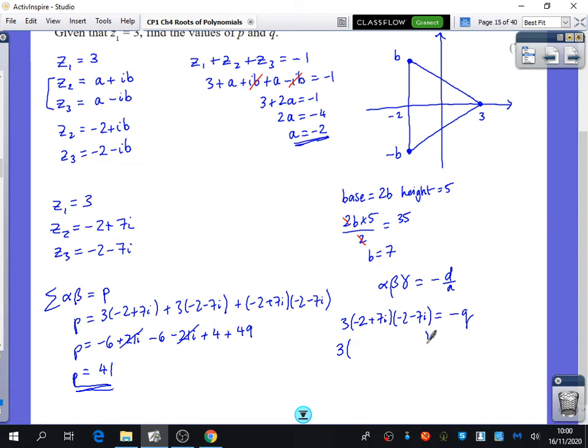I think it's probably easier to multiply the two complex numbers together first. We've already done it. Exactly. We've already done it over here before, which is 4 plus 49. And so that's 53 times 3, which is 159. So q is minus 159.